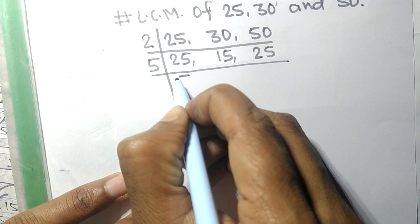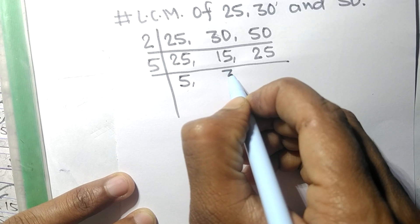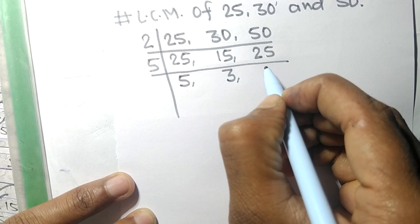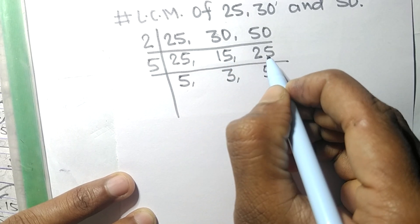So now these all numbers are exactly divisible by 5, so 5 times 5 means 25, 5 times 3 means 15, 5 times 5 means 25.